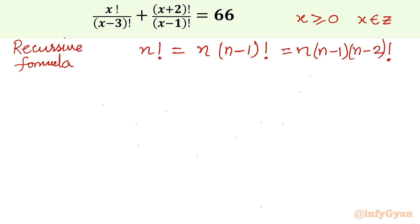Let's apply x factorial using recursive formula. I can write x factorial as x times x minus 1 times x minus 2 times x minus 3 factorial. My denominator would be unchanged, x minus 3 factorial. This is our first term.